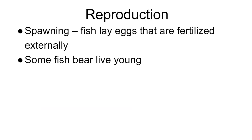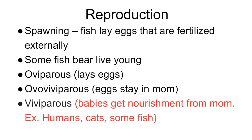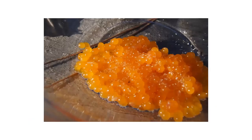Some fish do bear live young. A couple of terms to be aware of: oviparous, ovoviviparous — that's a fun one to say — and viviparous. These probably won't be on any test we have, but if you see those terms in the future, they just refer to how fish reproduce.